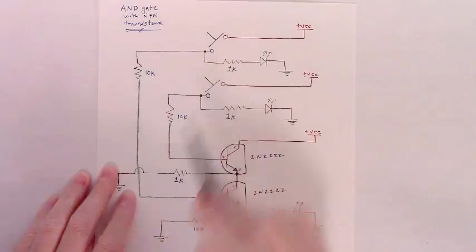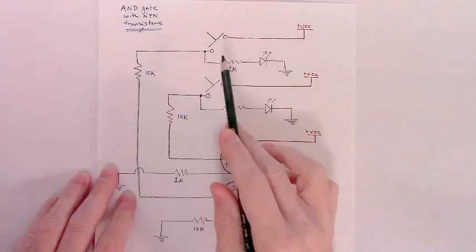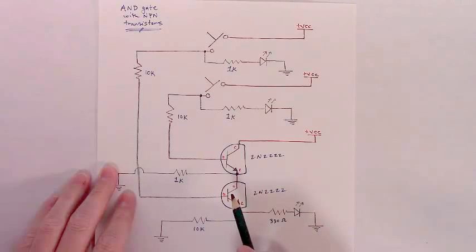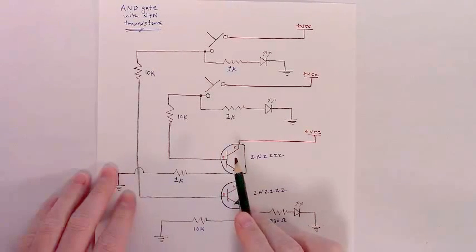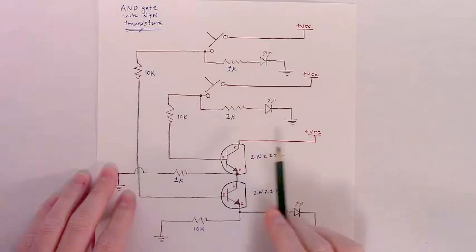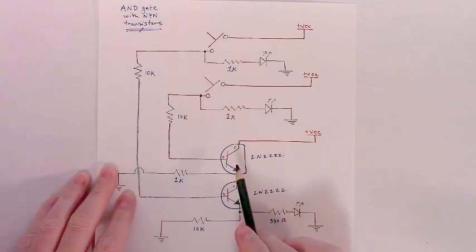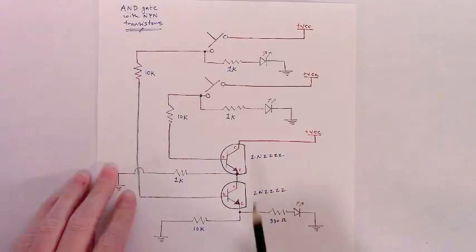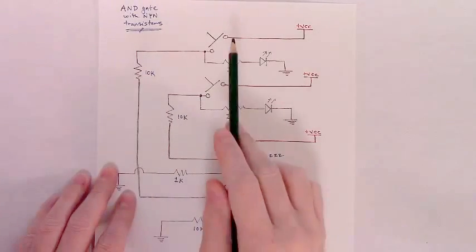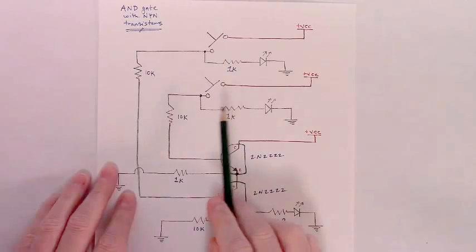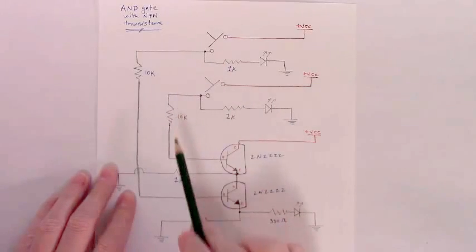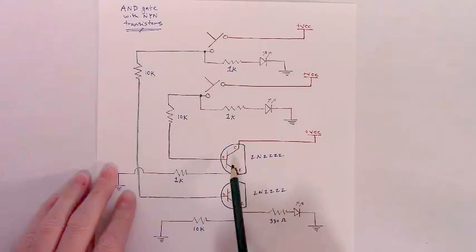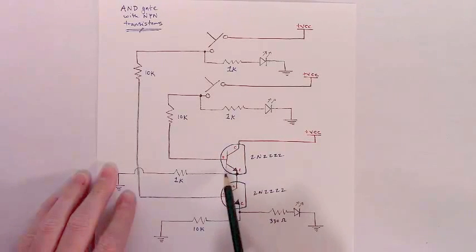So if we push just one momentary button — say the top one — that would turn on its transistor but not the other one. That transistor is on, but it has no way to draw voltage and current from VCC because the other transistor would be like an open in the circuit. Likewise, if you push only the lower button, you'd have VCC turning on that transistor, but it has no way to get back to ground, so current doesn't flow.